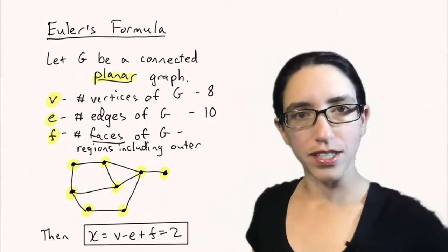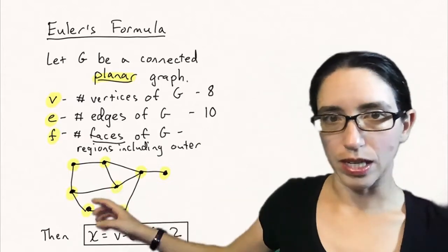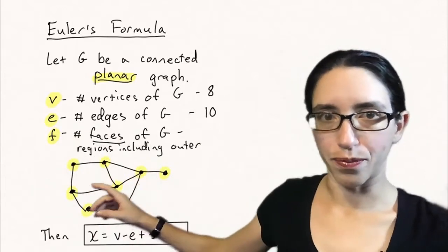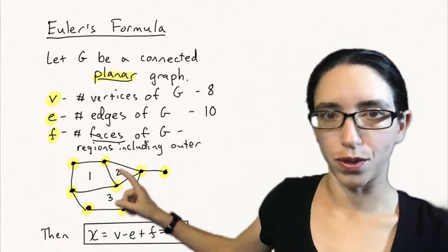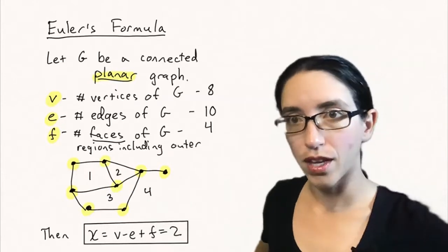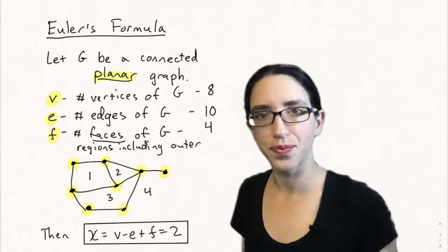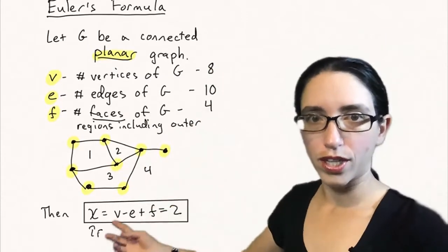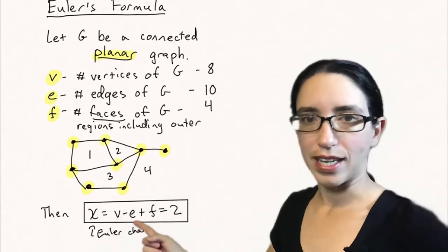How many faces are there? Faces are regions enclosed by the edges as if this was a map drawn in the plane. We can number them one through four here, and this outer region also counts as a region — it's like the piece of paper outside of the graph. So there are four faces. The Euler characteristic is defined to be V minus E plus F.